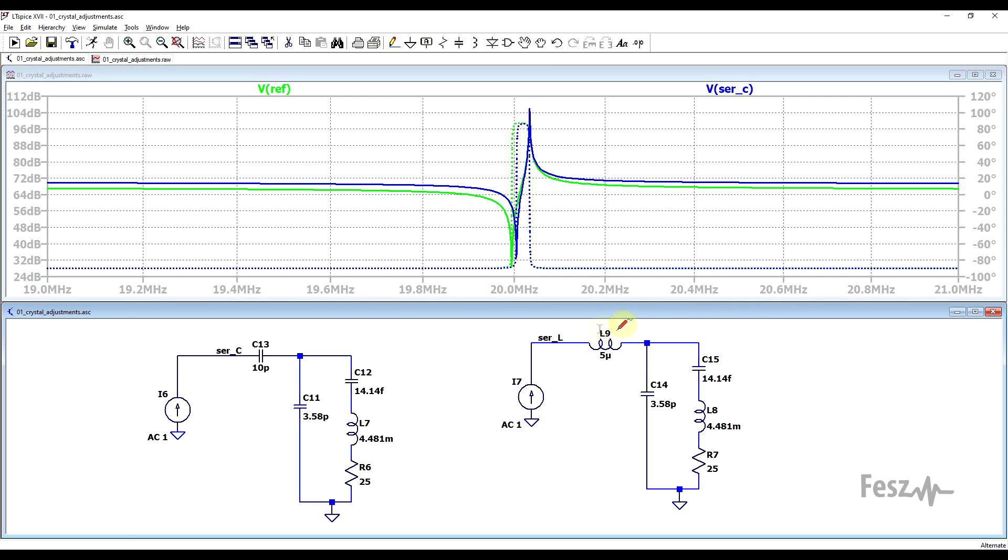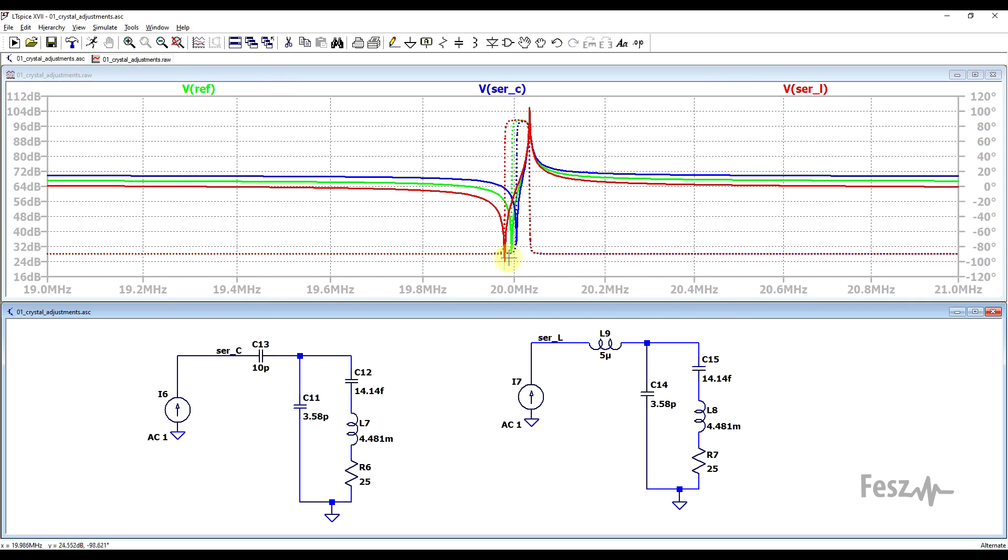Now, in a similar fashion, when we add a series inductor, this again should affect the series resonance, since this is in series with the series RLC circuit, and when we look at the impedance of this structure, we can see that our series resonance has moved to a lower frequency. So the total inductance is now larger than it was before.